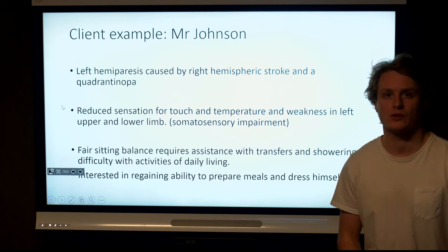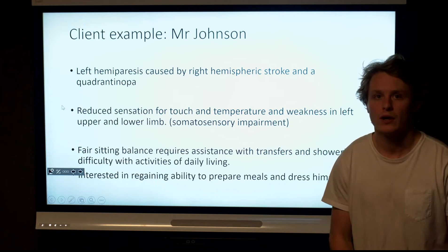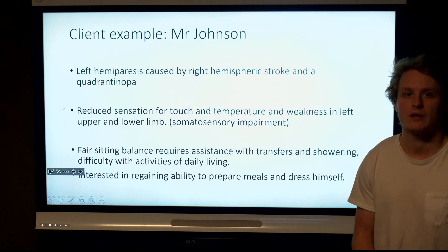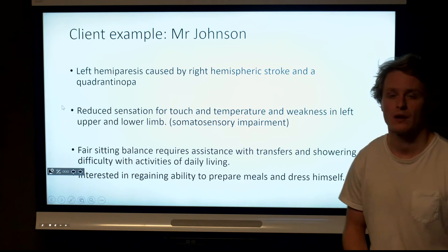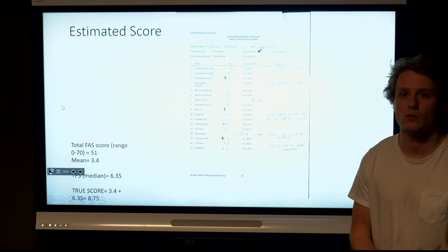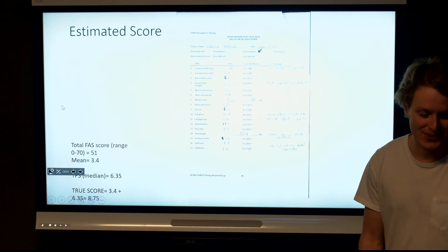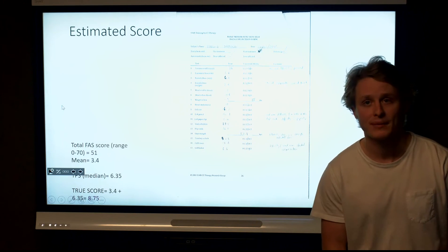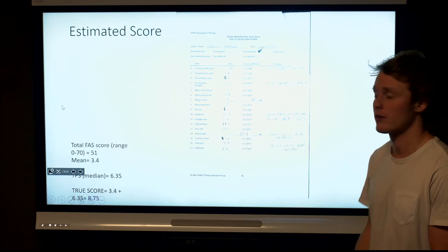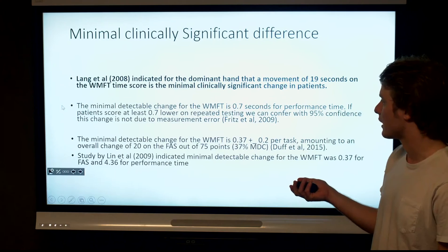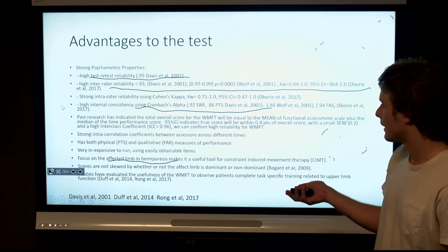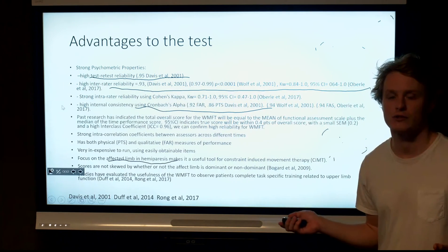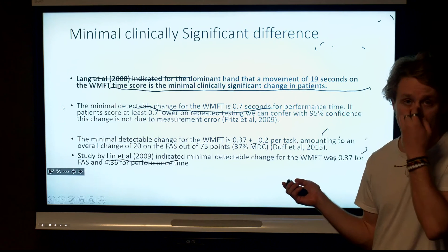Our example client is Mr. Johnson, who has had a right hemispheric stroke causing left hemiparesis, so he would be an ideal candidate to do the Wolf Motor Function Test given that he has reduced sensation of weakness in his upper limb. We would assess that he would achieve a total functional assessment ability score of 51, given that most of the time he would get a 3 or 4 on a lot of these simple motor tasks, which means that the motor function is relatively normal but there is a degree of compensation used.